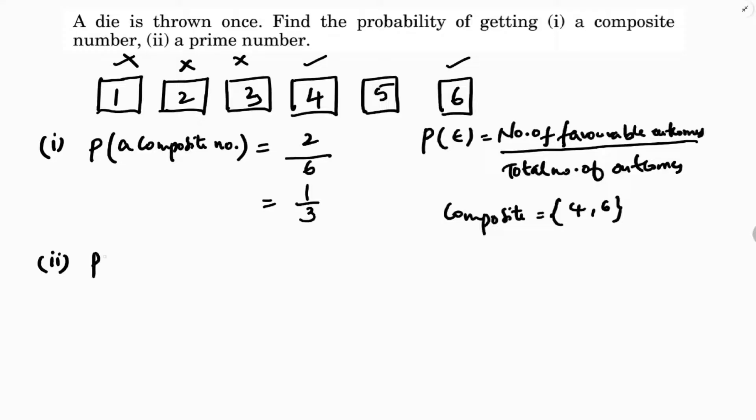Next, probability of a prime number. The prime numbers from 1 to 6 are 2, 3, and 5. So 3 are there. So 3 out of total 6, the answer is 1 by 2.